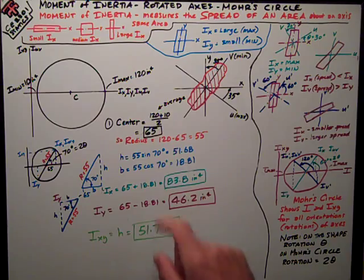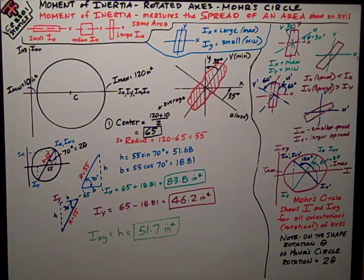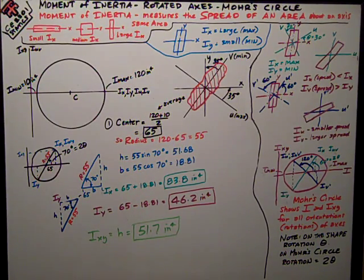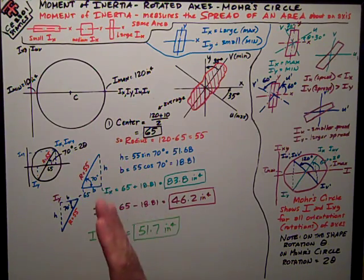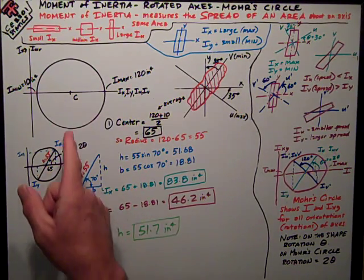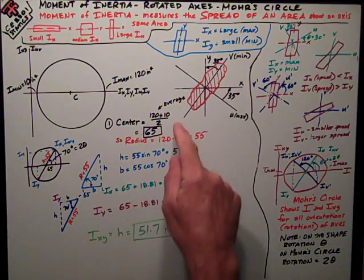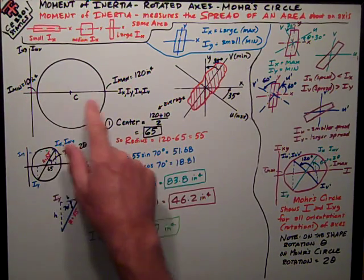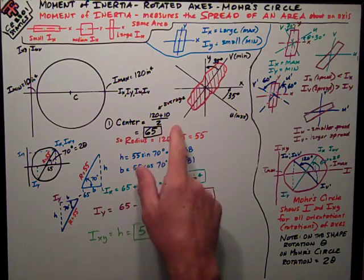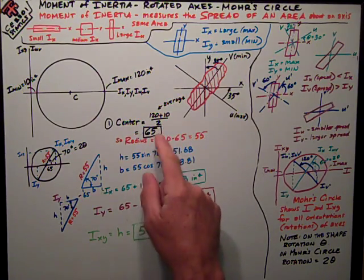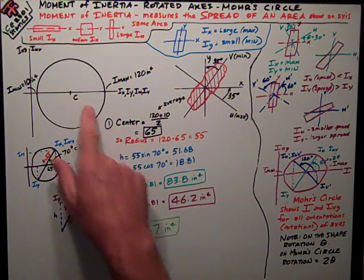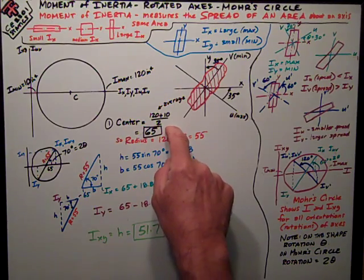Okay, the first thing we asked you for was the center, and we asked for the abscissa, which is the coordinate of the center of the circle, which is also the average moment of inertia. So I get the average by adding up the two values that I know, 120 and 10, dividing by 2, and so I get my center is at 65 inches to the fourth.